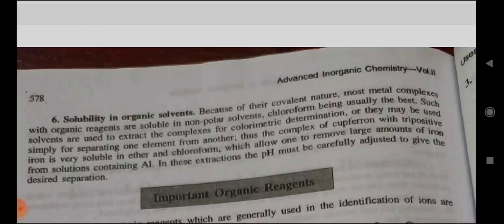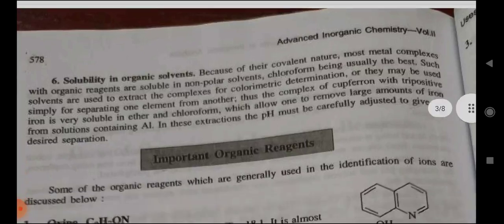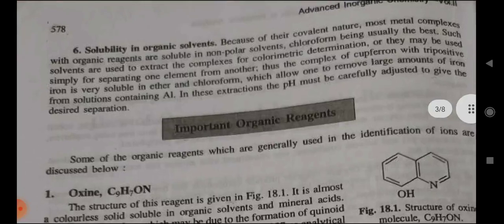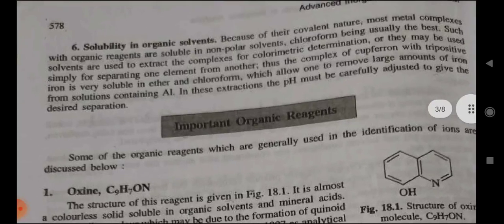Sixth — solubility in organic solvents: because of their covalent nature, most metal complexes with organic reagents are soluble in non-polar solvents, chloroform being usually the best. Such solvents are used to extract the complex for colorimetric determination, or they may be used simply for separating one element from another. For example, the complex of ferron with ferric iron is very soluble in ether and chloroform, which allows one to remove a large amount of iron from a solution containing aluminum. In this extraction, the pH must be carefully adjusted to give the desired separation.